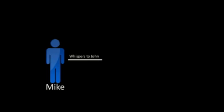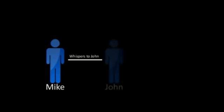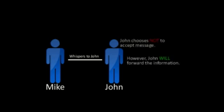Once again, we have Mike. This time, however, when Mike whispers to John, something different will happen. John will not be able to receive the information that Mike is giving him, because his mode is set to transparent. Transparent mode works like this: John will receive the message, but he won't store it. He'll simply forward the message to the next person.